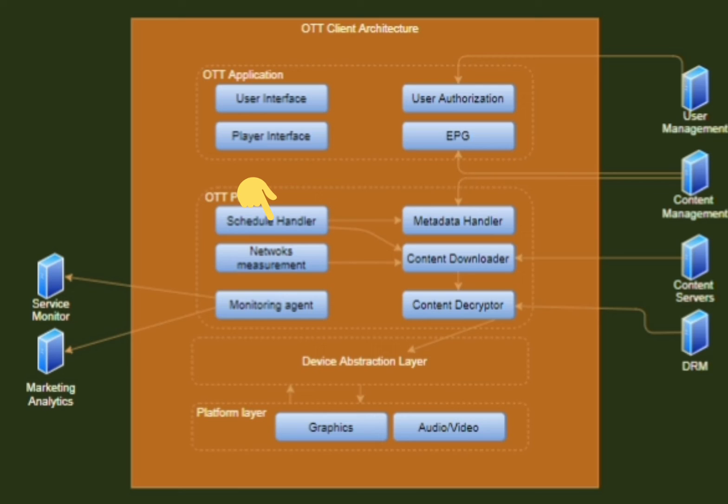Next is the OTT player — the OTT player is the core engine responsible for downloading, decrypting, and decoding the video content. The schedule handler is responsible for maintaining and triggering the right video clip to play as per the channel. It also instantiates the metadata handler and content downloader to start getting relevant metadata and video streams from the server.